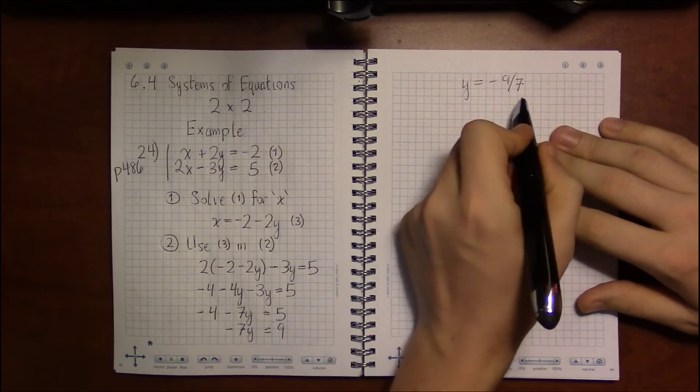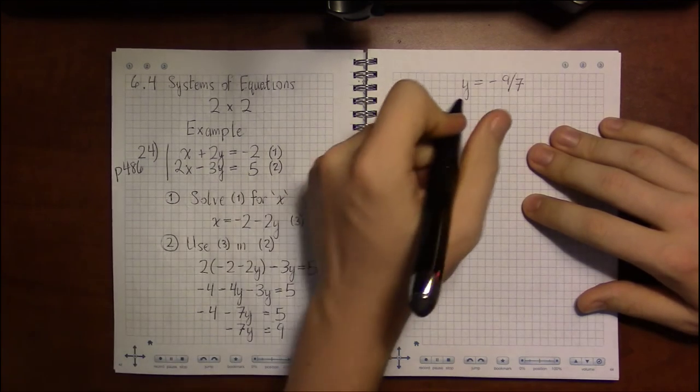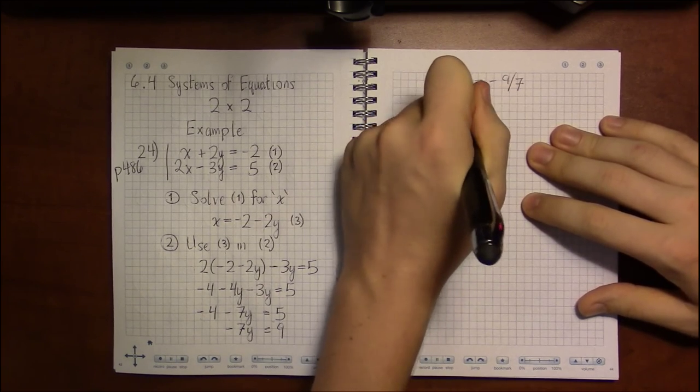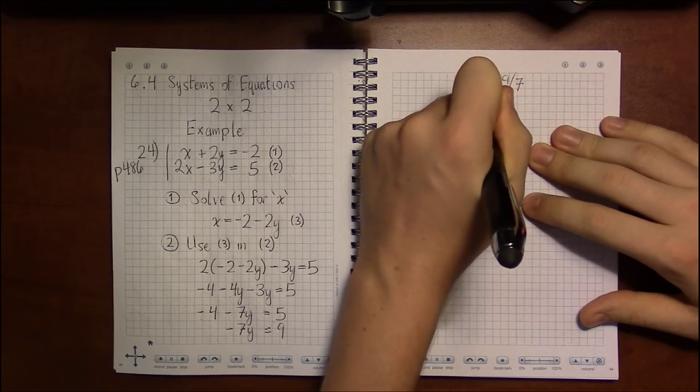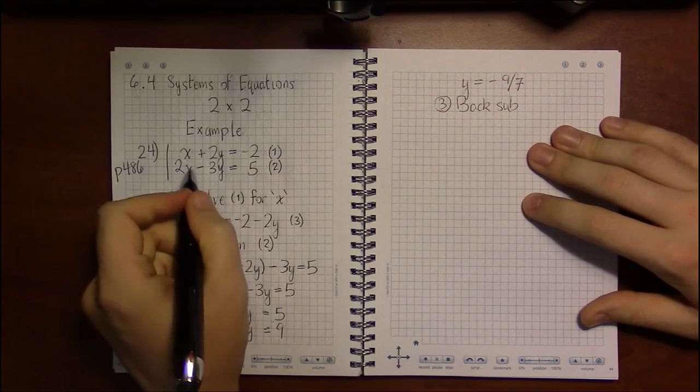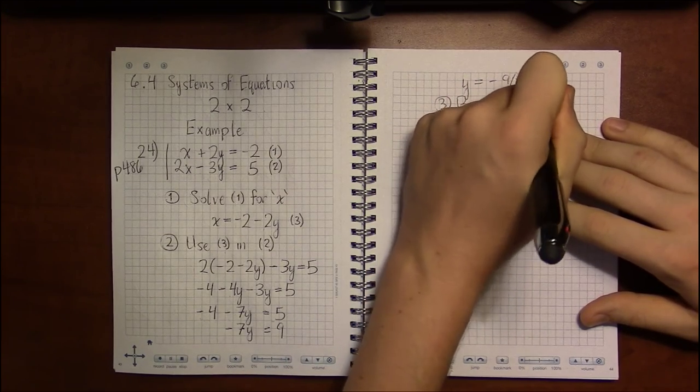So once we have this piece of information, we've got half of our answer. We know what y is supposed to be, so we will, as I call it, back substitute to find out what the correct value of x is in this exercise.